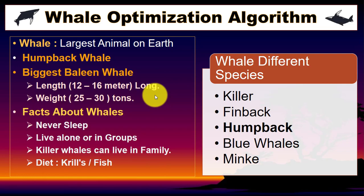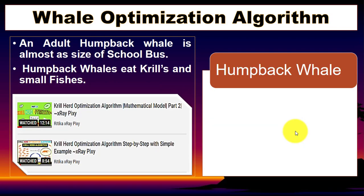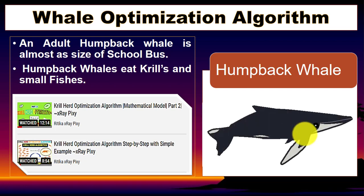The biggest baleen whale is 12 to 16 meters long and weighs about 25 to 30 tons. This algorithm — the Whale Optimization Algorithm — is inspired by the hunting technique used by the humpback whale. In this video we will learn about the humpback whale and their hunting strategy.